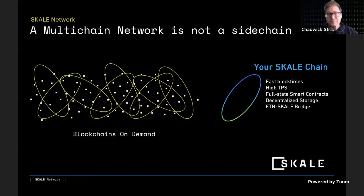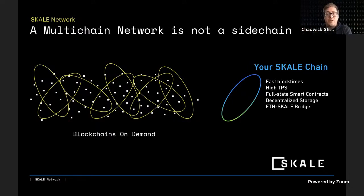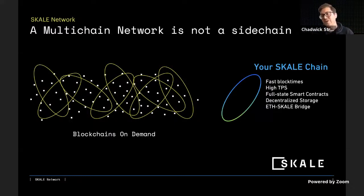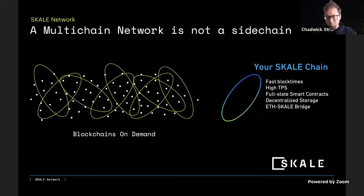A SCALE network can be hundreds of chains selected at random to support a particular dApp. As a dApp developer or any community using a SCALE chain, your SCALE chain — one out of many the network supports — is attributed to you, your dApp, and your community. You can dial in the specifics to support your infrastructure. Your SCALE chain has its own endpoint, fast block times, high TPS, full state smart contracts, decentralized storage, and a bridge called IMA.